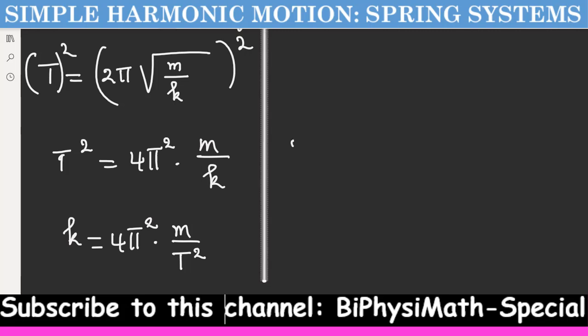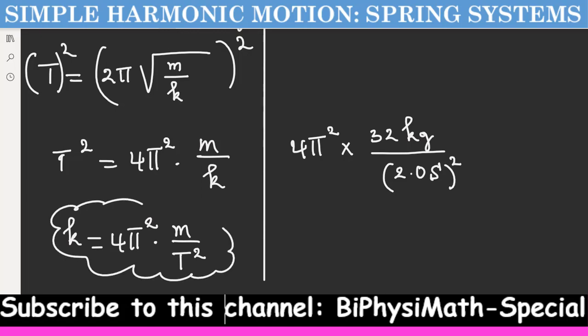We are going to substitute because we have 4π squared times mass in kilograms over K equals 2.0 squared. Using a calculator, you find 315.8 newtons per meter. This is the spring constant.